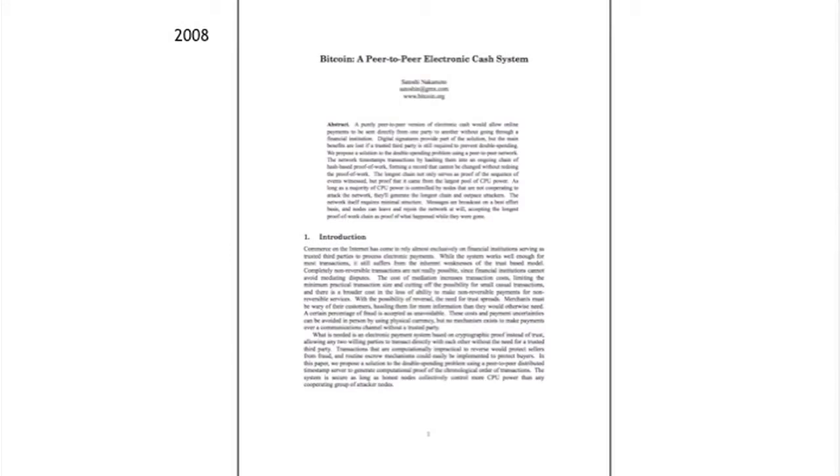Bitcoin began in 2008 with the release of a white paper called 'Bitcoin: A Peer-to-Peer Electronic Cash System,' authored by Satoshi Nakamoto. This paper, which you can still get online easily, is the initial description of what Bitcoin is, how it works, and the philosophy behind its design. It was released along with open source software to implement the Bitcoin system, and this is where everything started.